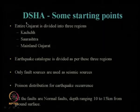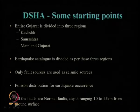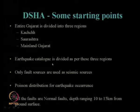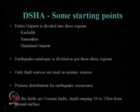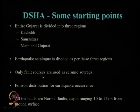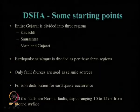Once the earthquake clustering, data clustering, and recurrence period are obtained, the next step is to carry out seismic hazard analysis — first deterministic seismic hazard analysis (DSHA), then probabilistic seismic hazard analysis (PSHA). For DSHA, salient points include: Gujarat is subdivided into three regions (Kach, Saurashtra, mainland Gujarat); the earthquake catalogue is divided per these three regions; only fault sources are used as seismic sources; and Poisson distribution for earthquake occurrence is assumed.